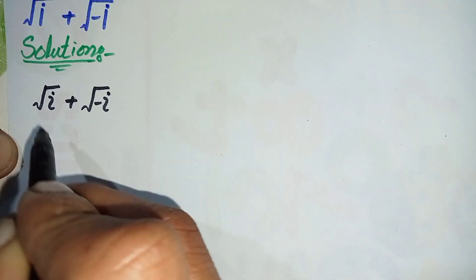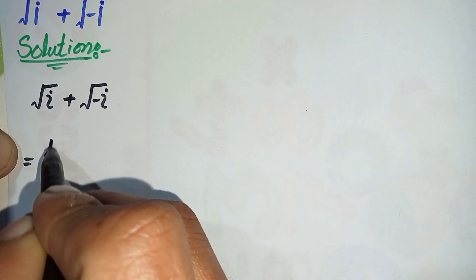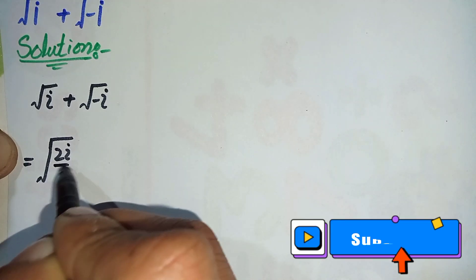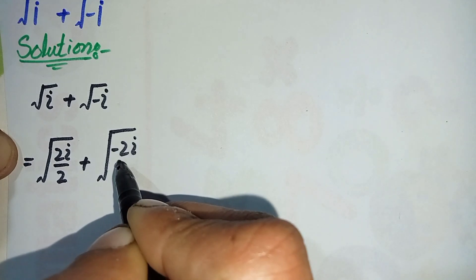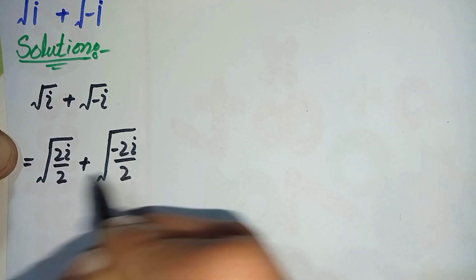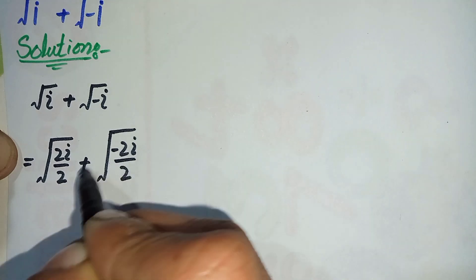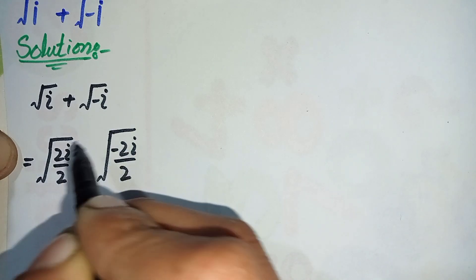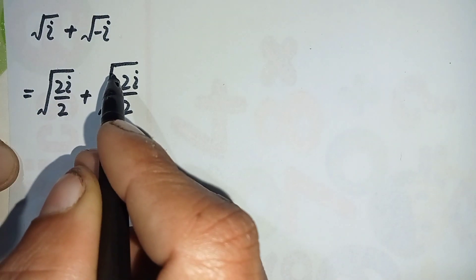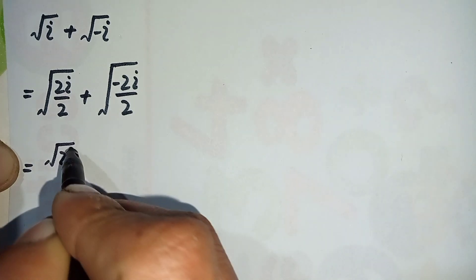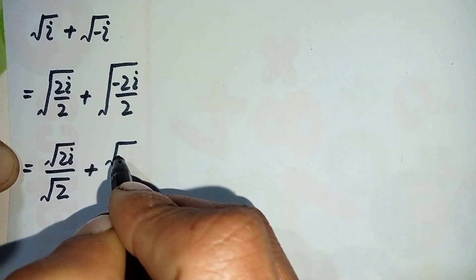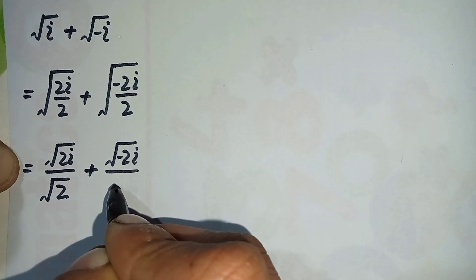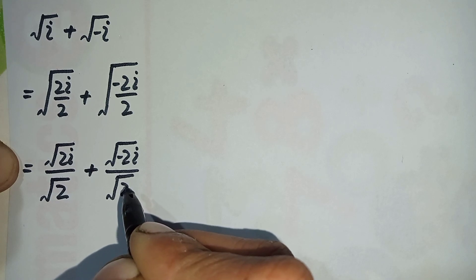To solve this properly, step by step, we can write iota as two times iota divided by two, and we can write minus iota as minus two iota divided by two. What we did here is multiply and divide by two in both terms. If we cancel the two, it gives us the original numbers back. Now we will split the square root over the numerator and denominator in both terms, giving us square root of two iota divided by square root of two, plus square root of minus two iota divided by square root of two.